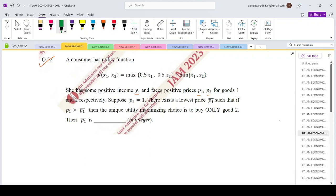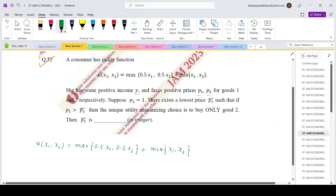Let us write down the utility function once more. So u as a function of x₁, x₂ equals max of 0.5x₁, 0.5x₂ plus min of x₁, x₂.